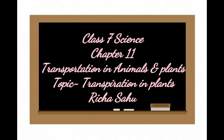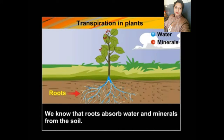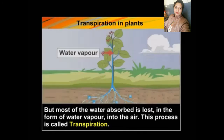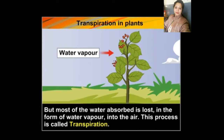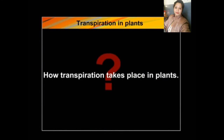Good morning children. Class 7 science, Chapter 11: Transportation in Animals and Plants. Today's topic is transpiration in plants. We know that roots absorb water and minerals from the soil, but most of the water absorbed is lost in the form of water vapor into the air. This process is called transpiration.